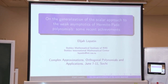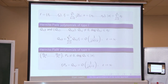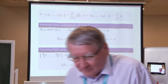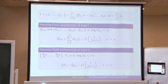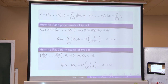First of all, I would like to recall the definition of the Hermite-Padé polynomials of both types, despite this definition being given in many previous talks today. For a vector of functions vanishing at infinity of a given order and multi-index N, the Hermite-Padé polynomials of type 1 and type 2 are defined as follows. This gives a linear system for the coefficients of these polynomials, which is always solvable, but the solution in the general case is not unique.